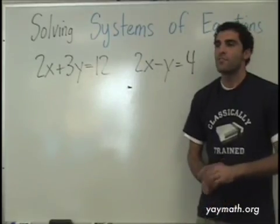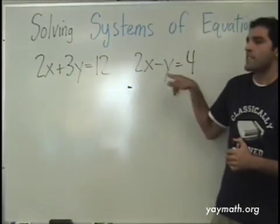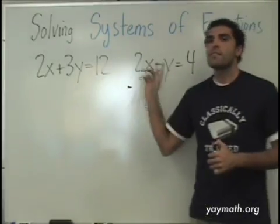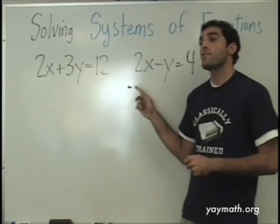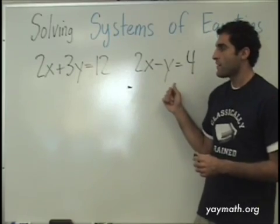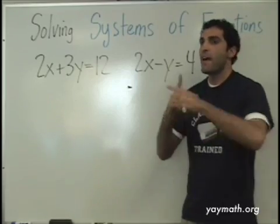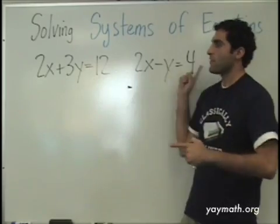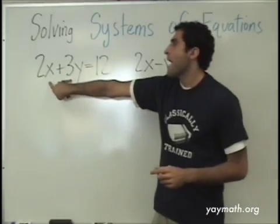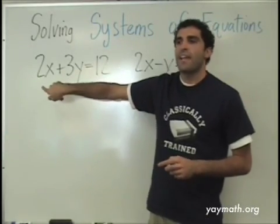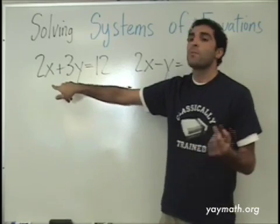Here's the issue. This is an equation with two variables. This is an equation with two variables. Are these linear — are these lines? Yes. So these are two lines, and we're trying to find out if they cross, where they cross. And that will be the solution for both. So let's think about this for a sec — brief review. How many solutions exist for this line itself?